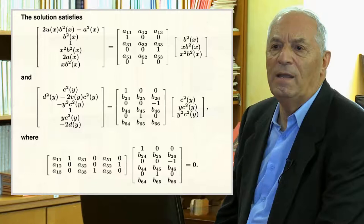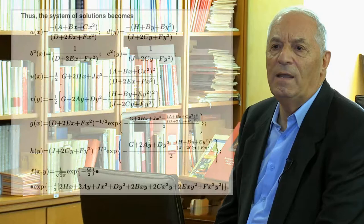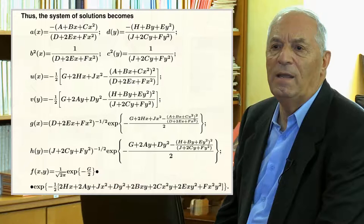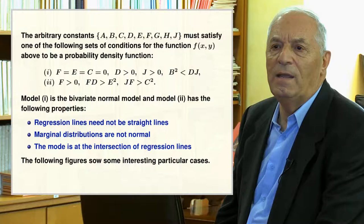We write the constraints that must be satisfied: the product of the first matrix transposed by the second must give the null matrix. Developing this product yields the b unknowns in terms of the a unknowns. Replacing and re-parameterizing, we get expressions for all unknown functions and the joint density of the most general bivariate distribution with normal conditionals. The parameters A to J are not arbitrary but must satisfy one of the indicated conditions for the density to be a valid probability density function, giving us two families of models.